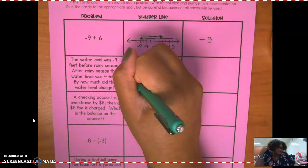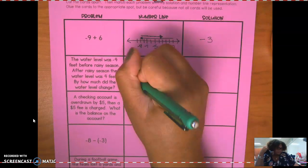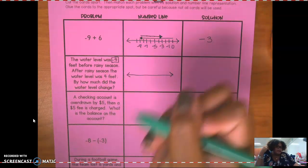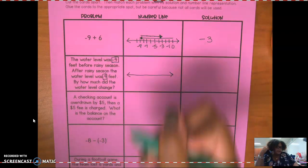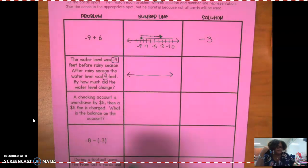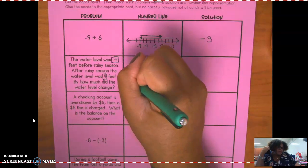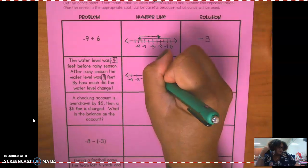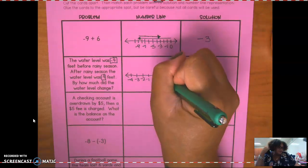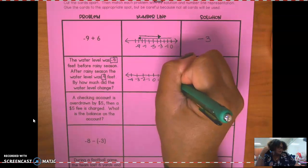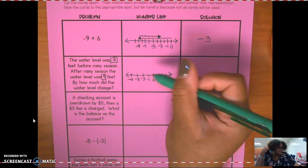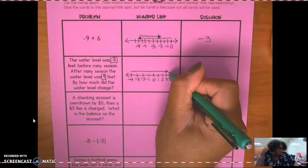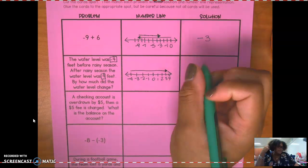So let's draw a number line. And I need to start at negative four and I need to end where? Positive four. So let's draw a number line. Negative four, negative three, negative two, negative one, zero, one, two, three, four. How do I get from negative four all the way to positive four?